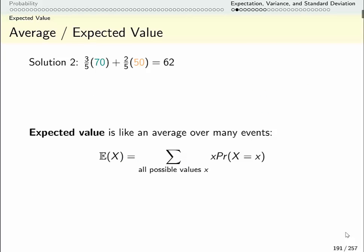So if we do the computation this way we can also call this an expected value. If I don't know actually how many people took the exam but I know three-fifths of them got a 70 and two-fifths of them got a 50, maybe it wasn't five people maybe it was a hundred, then I could still calculate this number.